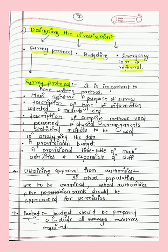The second step is designing the investigation — the survey protocol. A protocol is a set of rules and objectives. It includes the purpose, objective, description, the type of information to be collected, and the methods to be used for collection of data.